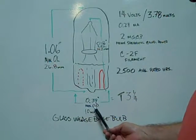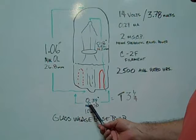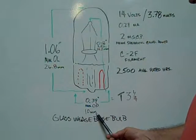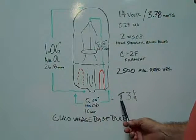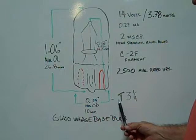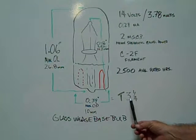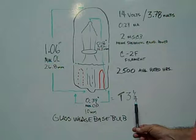Maximum overall diameter is 0.39 inches or 10 millimeters. That's equal to a T three and a quarter. T for tubular shape, three and a quarter eighths of an inch in diameter.